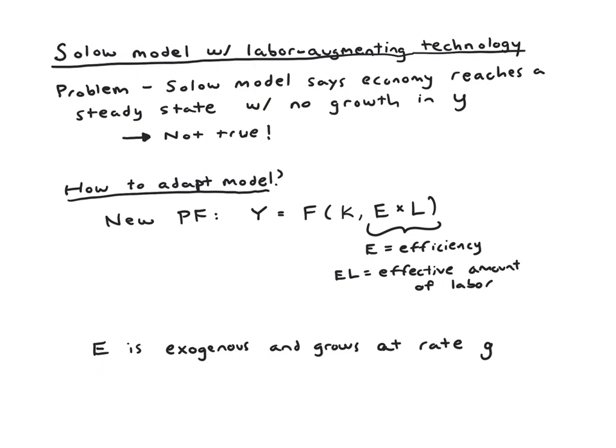And if you look at data for the U.S. or pretty much any other country, you'll see that that's not true at all. In most countries, despite having lots of capital and presumably reaching some sort of steady state, they continue to have growth in output per worker, reflected in growing wages and growing incomes. In the U.S., output per worker has grown at about 2-3% per year for quite a while.